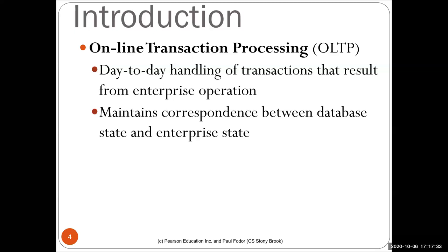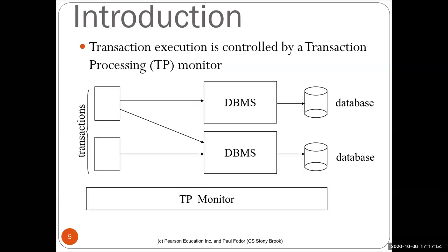A transaction may involve updates from different databases and must be possible to roll back in case it doesn't succeed. The OLTP or transaction processing monitor monitors the entire execution of a transaction over possibly multiple databases. If a transaction is not executed completely, it must roll back all changes. All changes of a transaction must have those ACID properties.